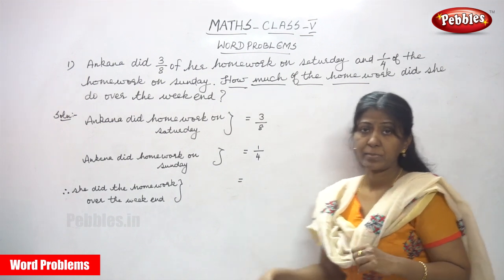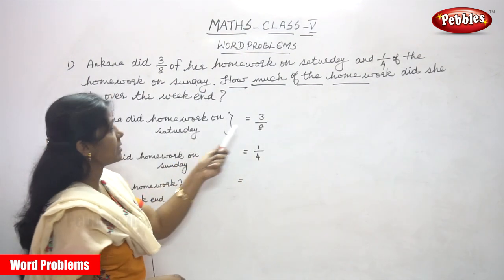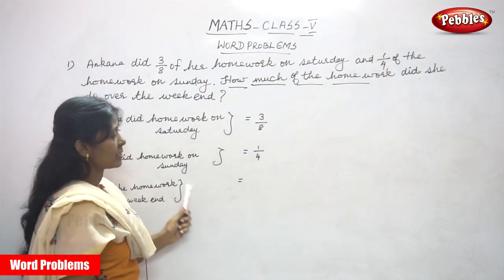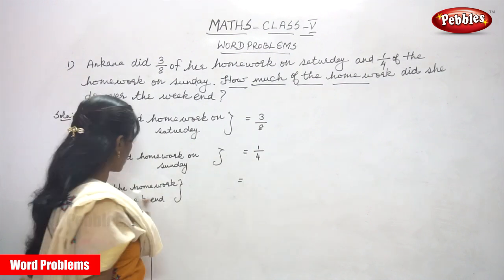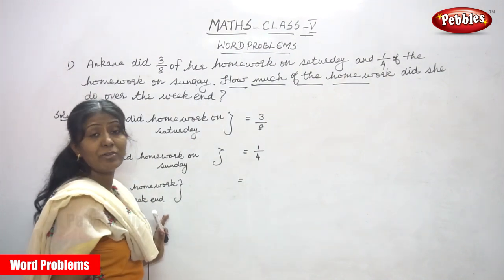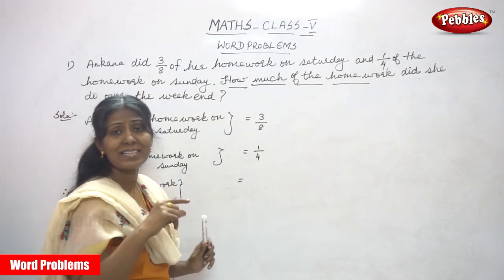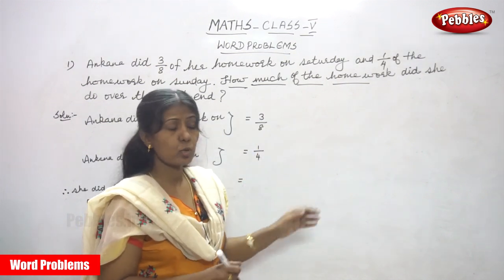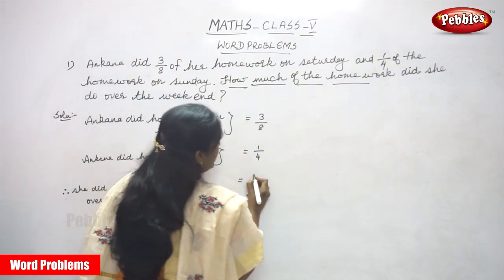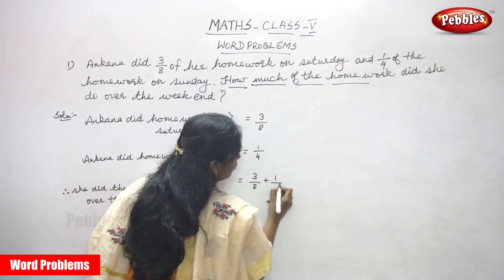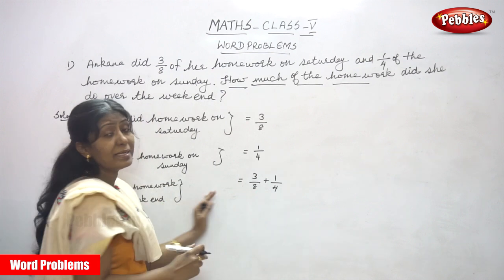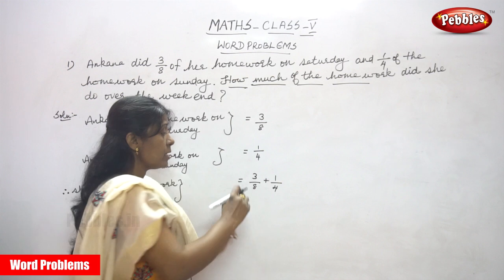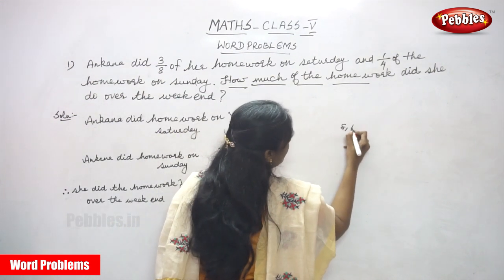Now we are going to solve the sum. On Saturday she completed three-eighths, and on Sunday she completed one-fourth. She did homework over the weekend, meaning within two days. So we understand this is an addition problem — we are going to add both fractions: three-eighths plus one-fourth.